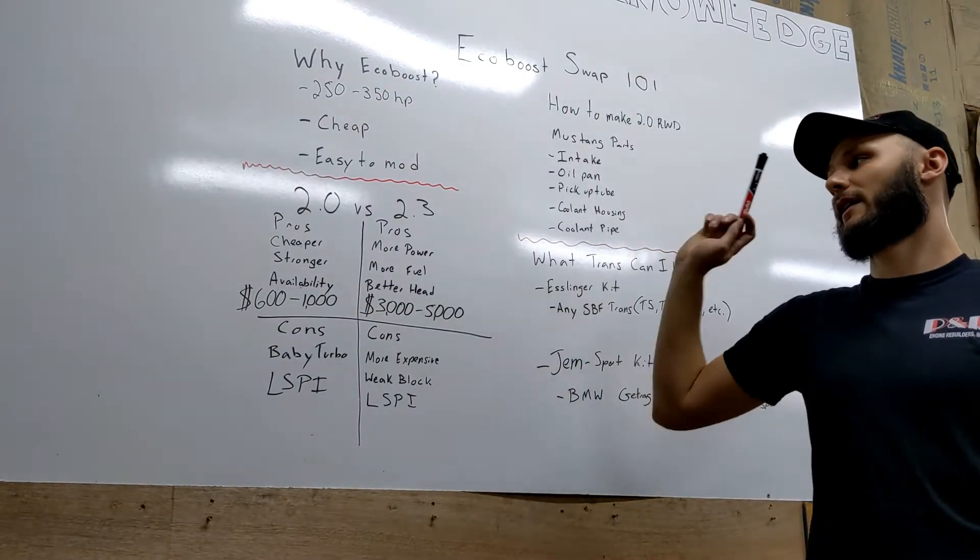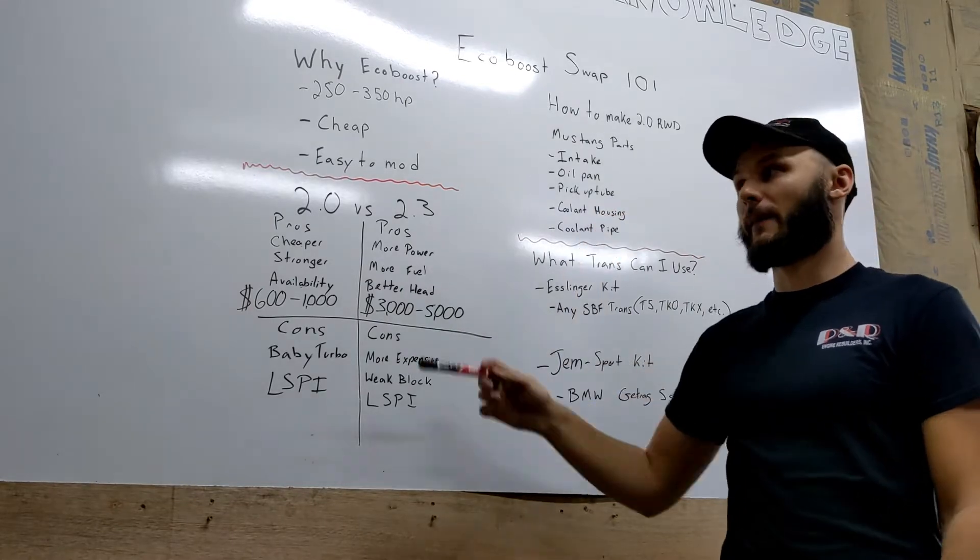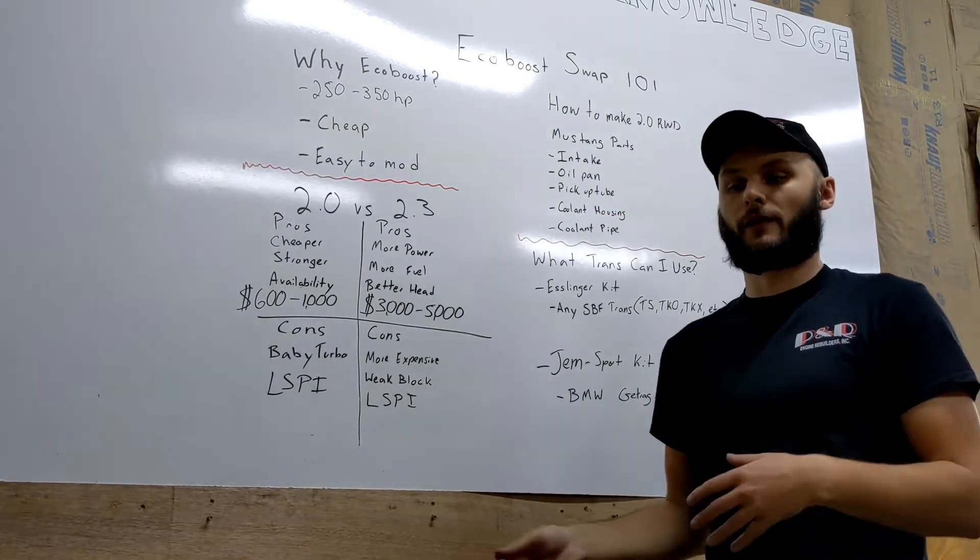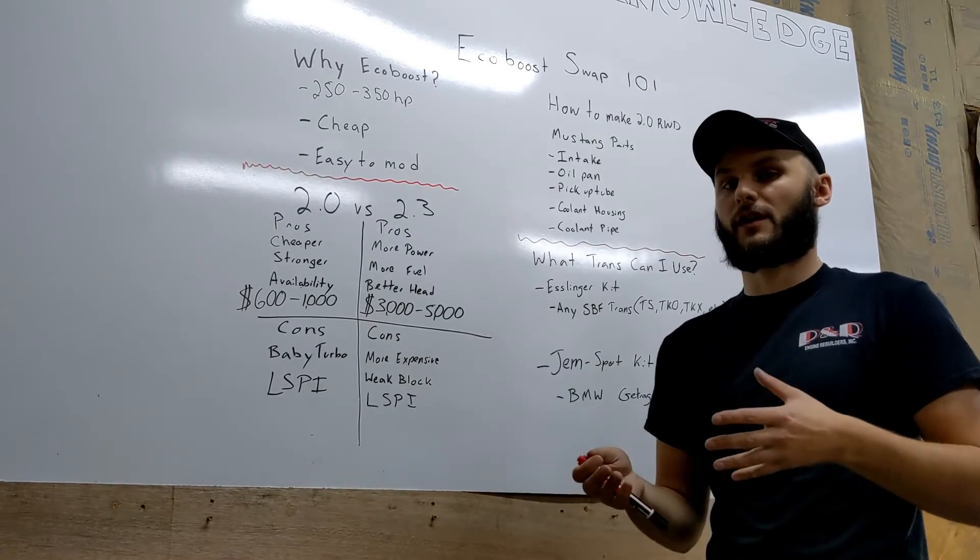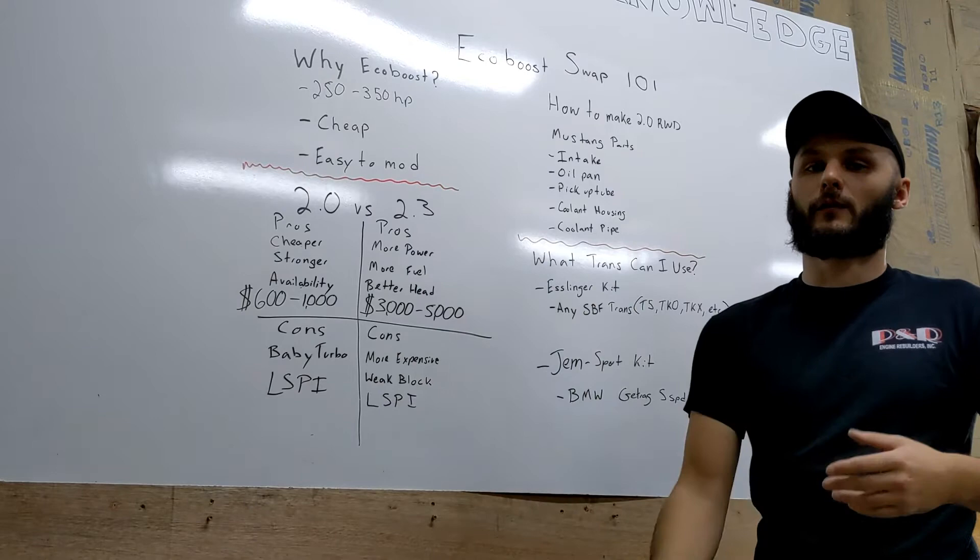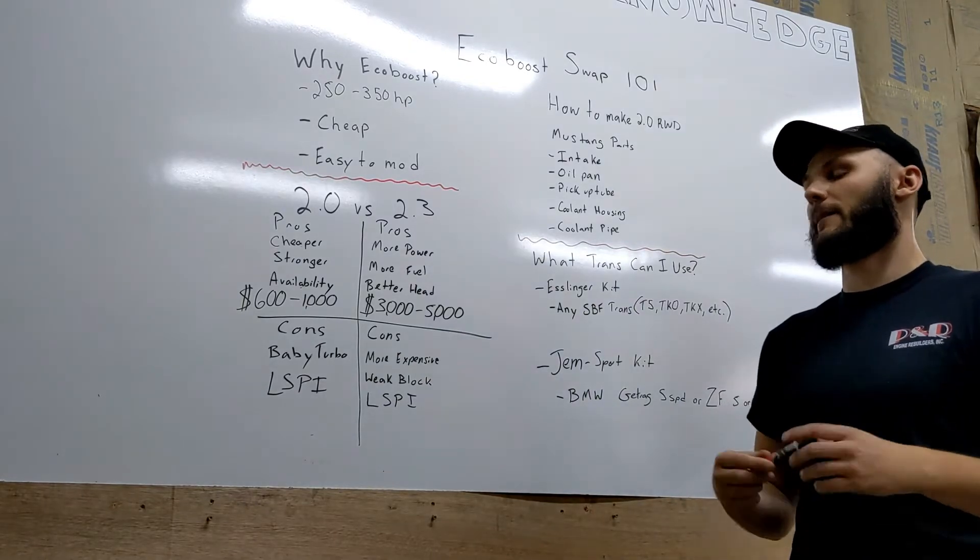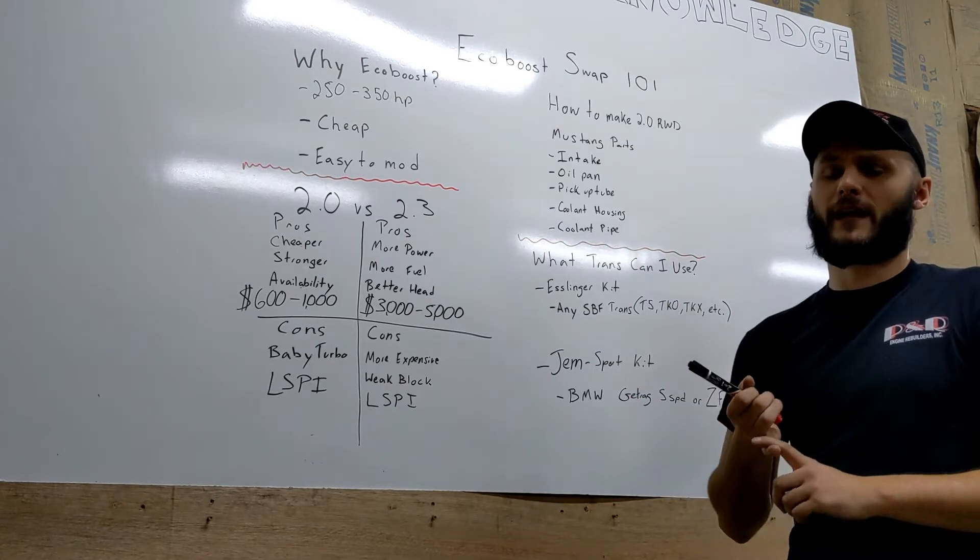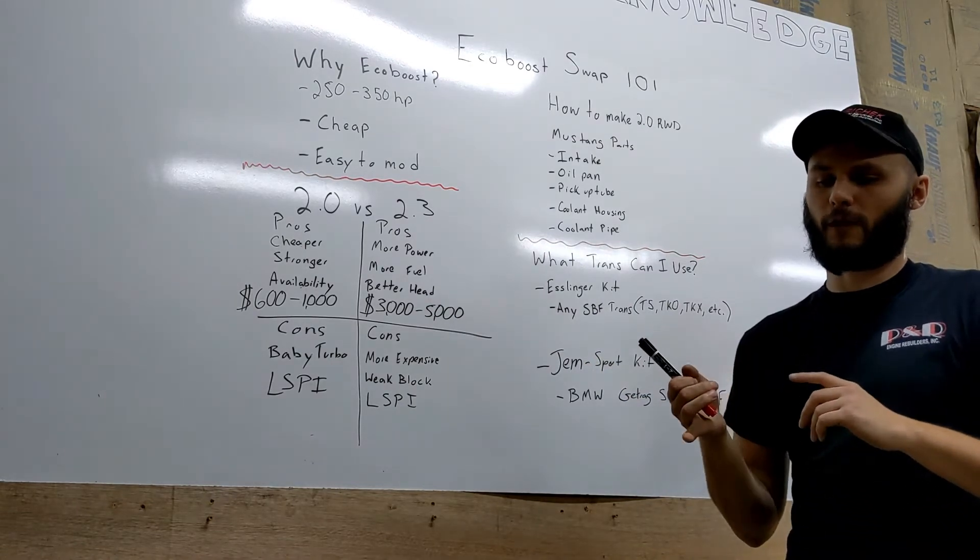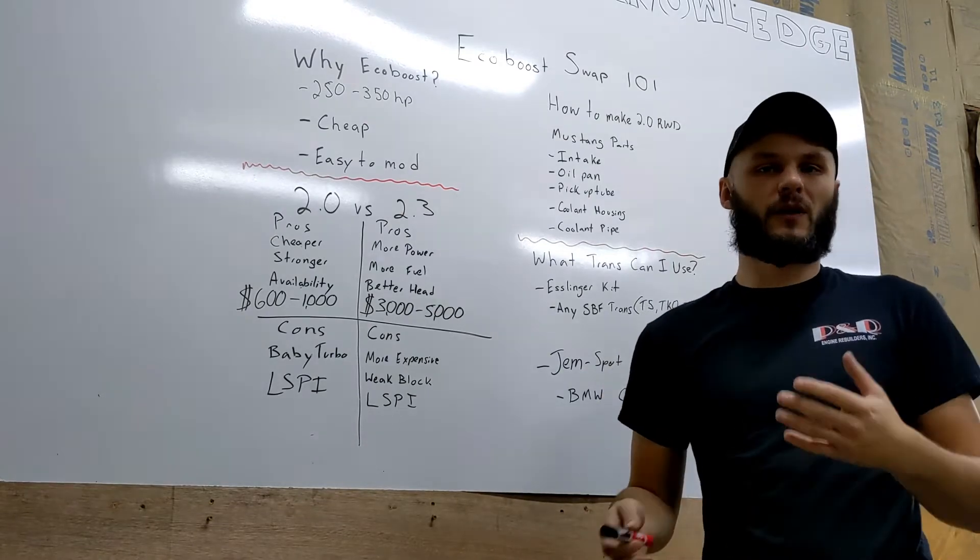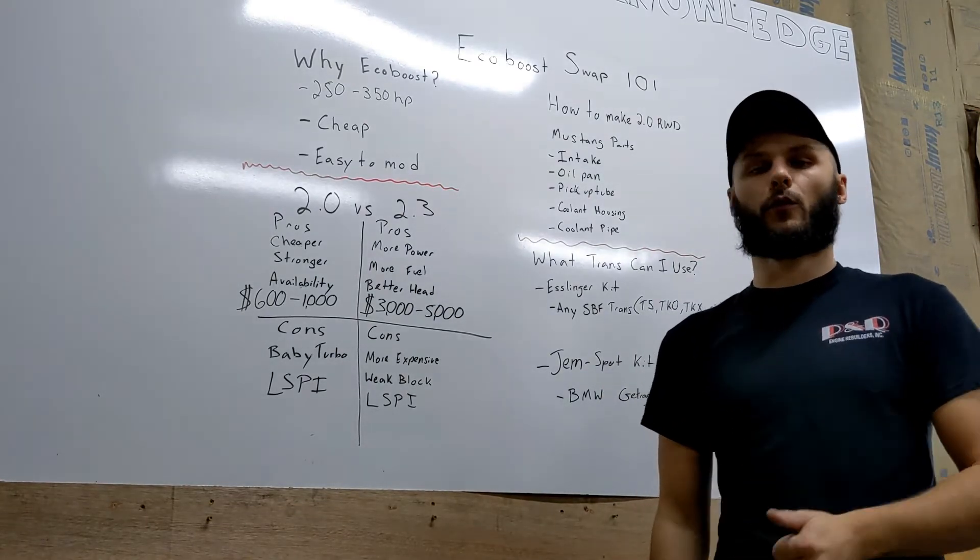The 2.3 from the factory makes about 100 more horsepower. So if you are looking for 350 horsepower from your EcoBoost swap without doing a whole bunch of mods, the 2.3 is the way to go. It's a little bit more pricey, but it makes more power. It has better fueling, it has a four lobe cam for the direct injection fuel pump, and it'll supply about 25% more than the two-liter pump.